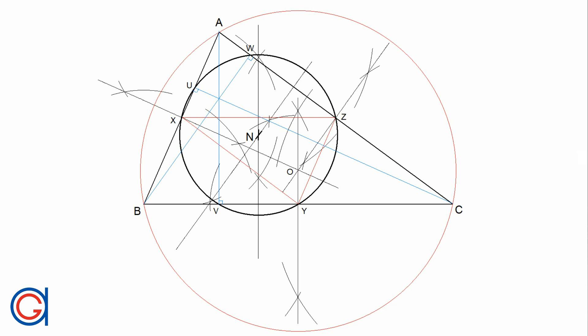These heights intersect the nine-point circumference, obtaining the three remaining points R, S and T, shown here as red dots. R is the midpoint of line segment HA, S is the midpoint of line segment HB, and T is the midpoint of line segment HC. So now we have obtained all nine points. Finally, we draw Euler's line in red by connecting the three centers: the orthocenter H, the nine-point center N, and the circumcenter O, elongating the line as shown.